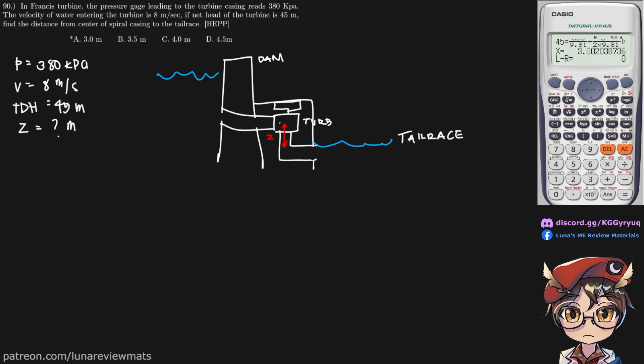So our first clue is that TDH is equal to pressure head plus the velocity head, plus the static head plus our friction head. But it says nothing about the friction, so let's just assume this is zero. The pressure head is equal to P over gamma, which is the weight density. The velocity head is V squared over 2G. And the static head is simply Z in this case.